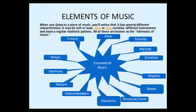Elements of music first of all. When you listen to a piece of music, you'll notice that it has several different characteristics — just like a personality, just like a movie that you may watch, just like a piece or a sculpture or painting. It may be soft or loud, slow or fast, combine different instruments and have a regular rhythmic pattern. All of these are known as the elements of music.